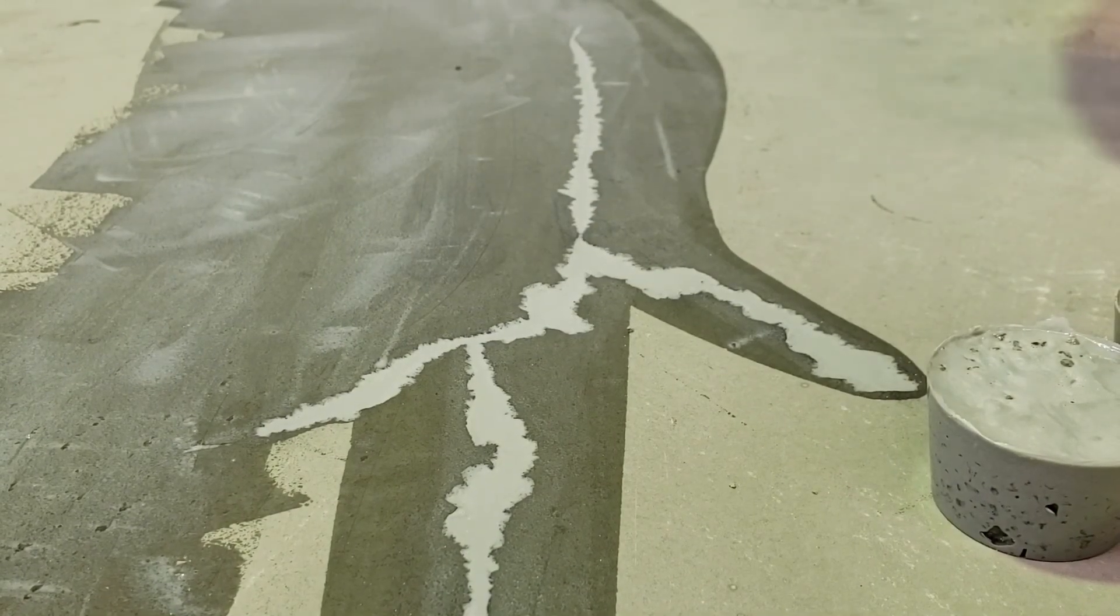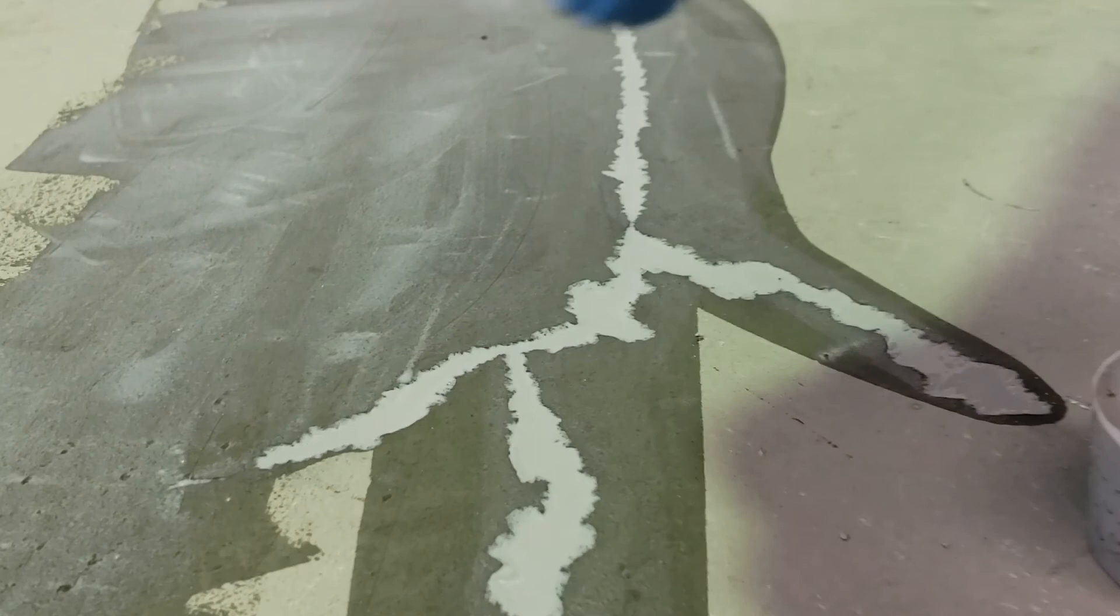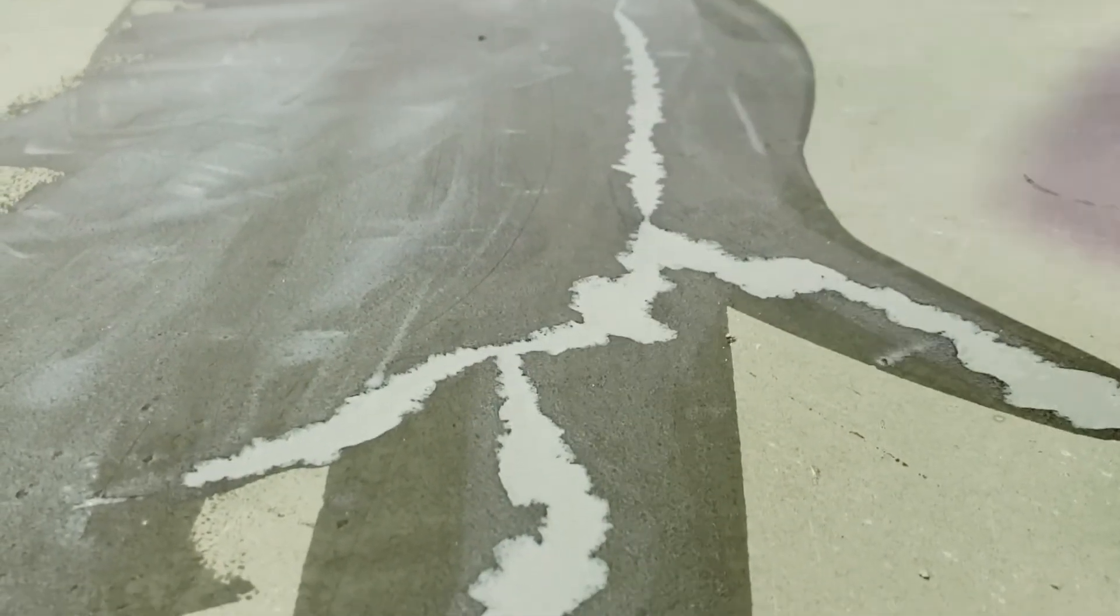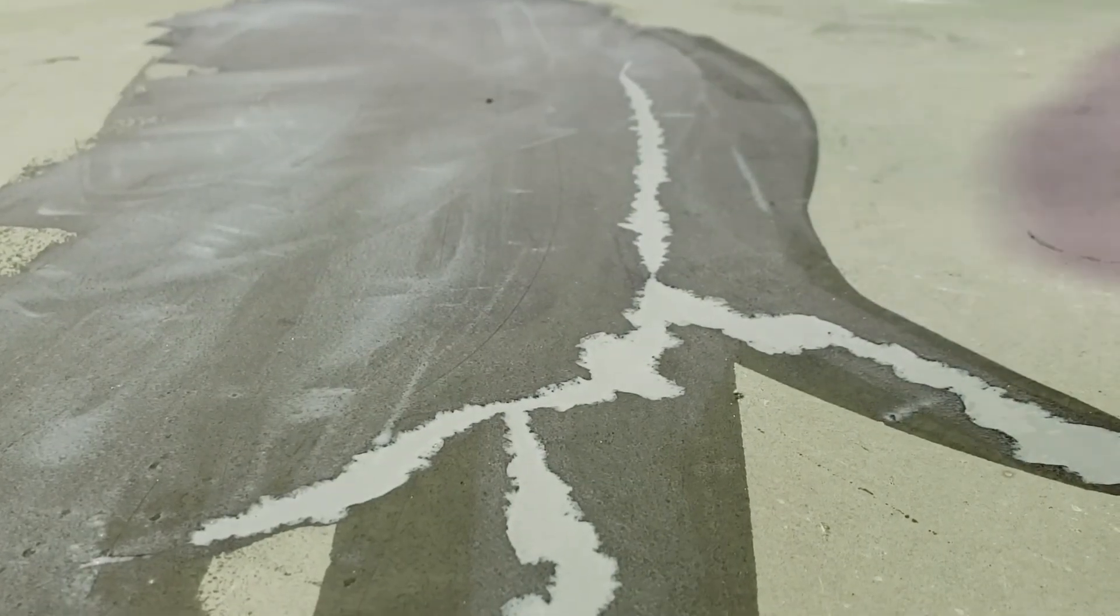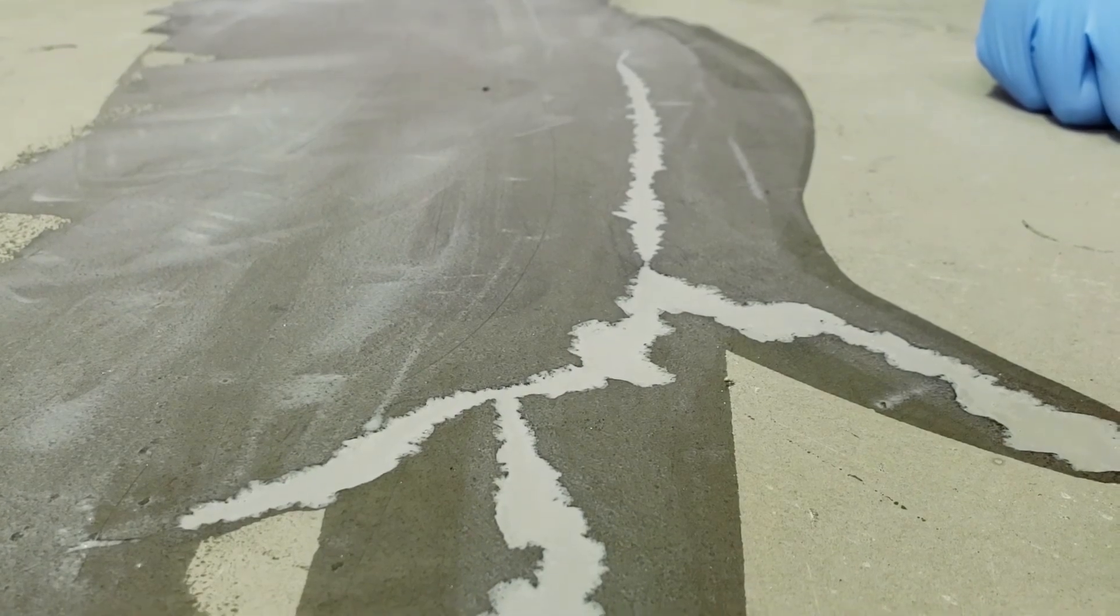If you want to as well, you can, while it's still a little bit wet, apply a little bit of sand on the top surface. This allows for a mechanical key for your waterproofing membrane to stick to.